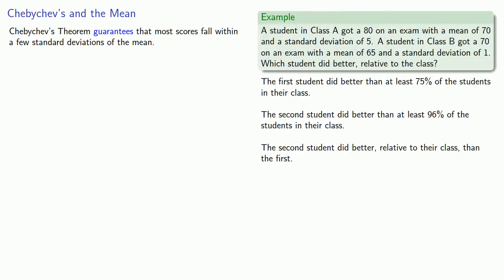Now, Chebyshev's theorem guarantees that most scores fall within a few standard deviations of the mean. And so, this allowed us to compare different scores in different classes. So, back in this problem, we were able to determine that the first student did better than at least 75% of the students in their class, while the second student did better than at least 96% of the students in their class.